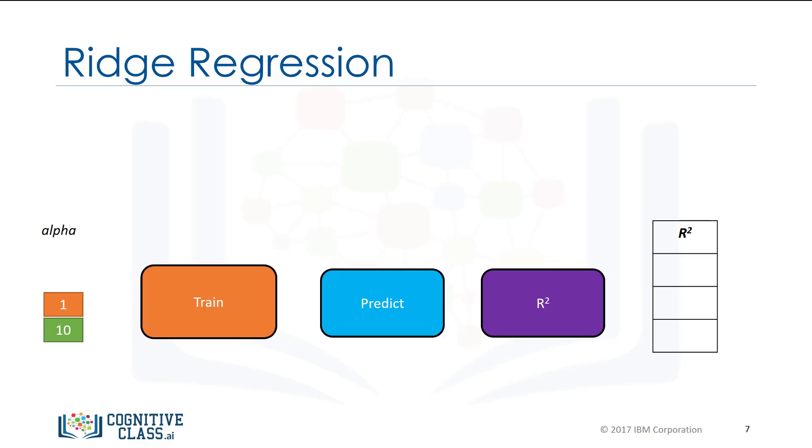We start with a small value of alpha. We train the model, make a prediction using the validation data, then calculate the R squared and store the values. Repeat the value for a larger value of alpha. We train the model again, make a prediction using the validation data, then calculate the R squared and store the values of R squared.